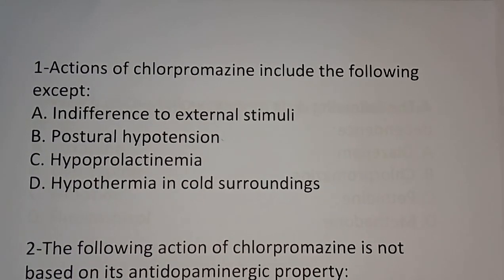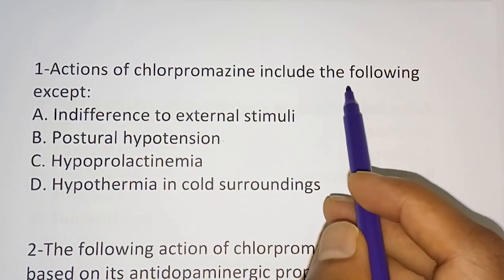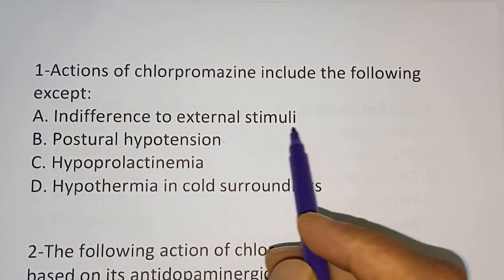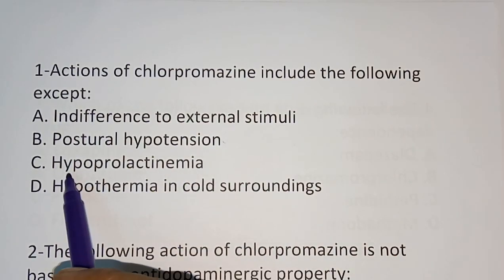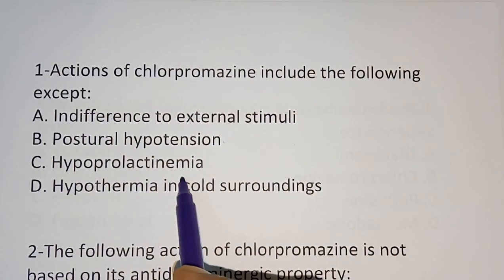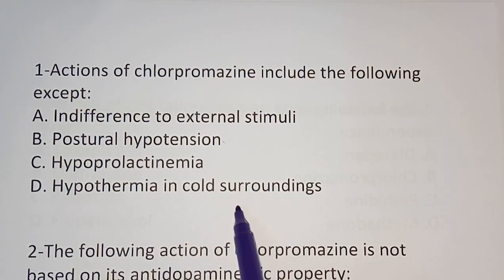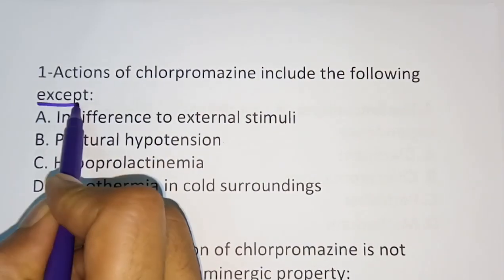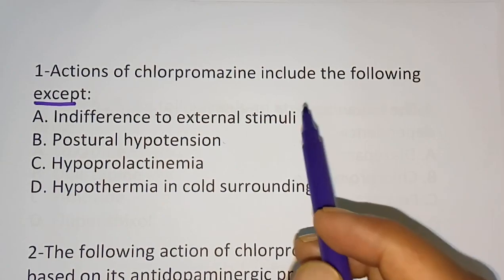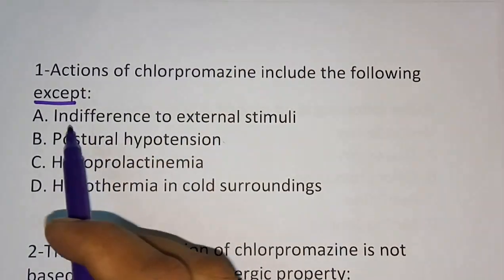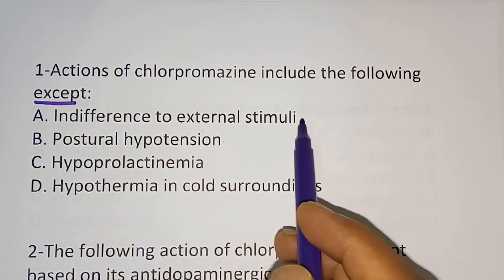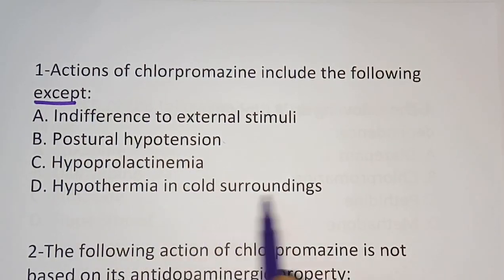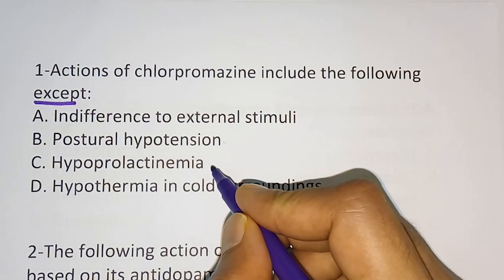Question 1: Actions of chlorpromazine include the following except. Options are: indifference to external stimuli, postural hypotension, hypoprolactinemia, hypothermia in cold surroundings. The correct answer for this question is hypoprolactinemia.